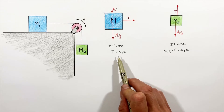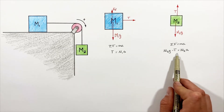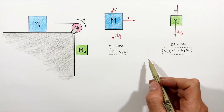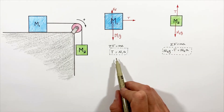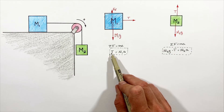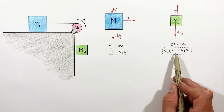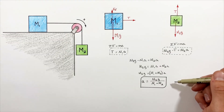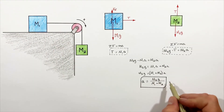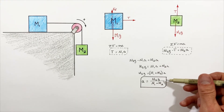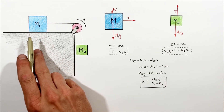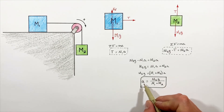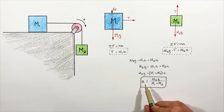Using Newton's second law we've created a system of two equations with two unknowns: tension and acceleration. To solve, we rearrange and substitute. The first equation is already arranged for tension, so we substitute T = m1a into the second equation. This gives us an expression for the acceleration of both blocks as a function of their masses and g. If you have actual values for the masses from a homework problem, you can plug them straight into this formula to get the acceleration.